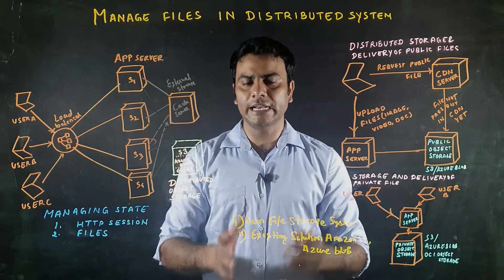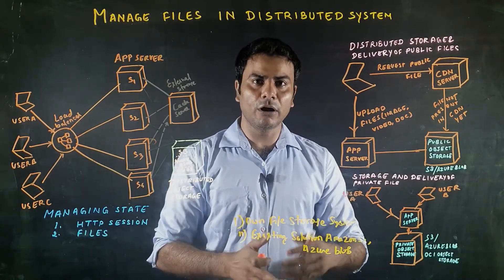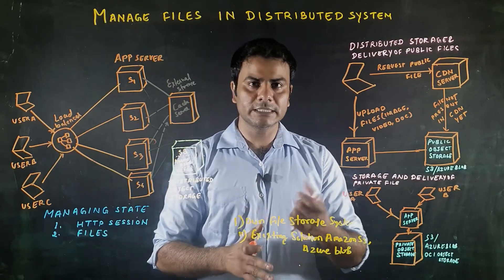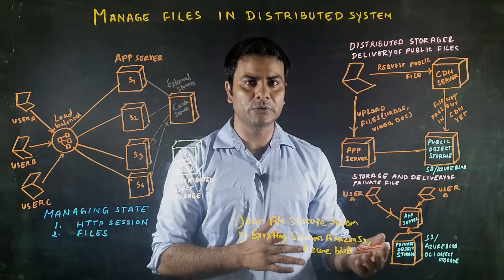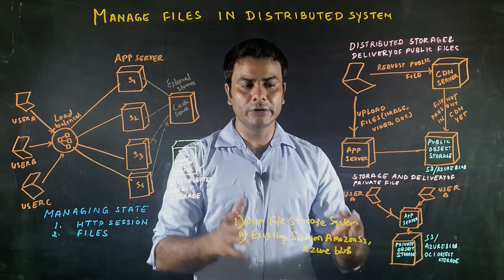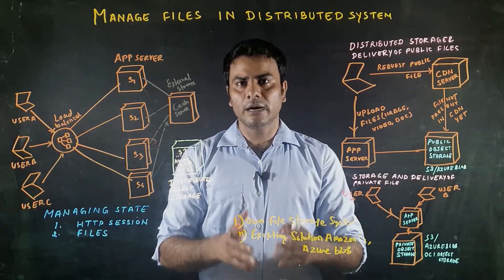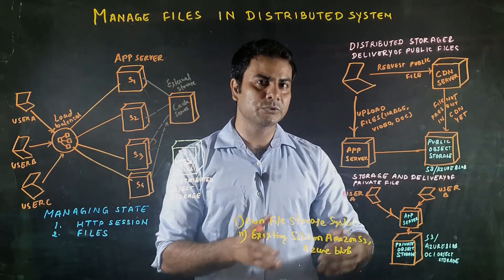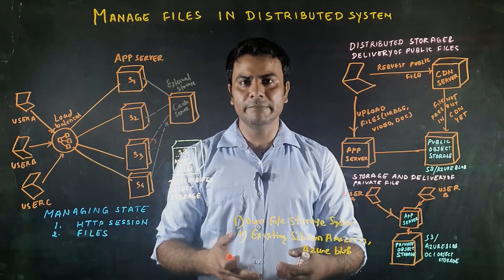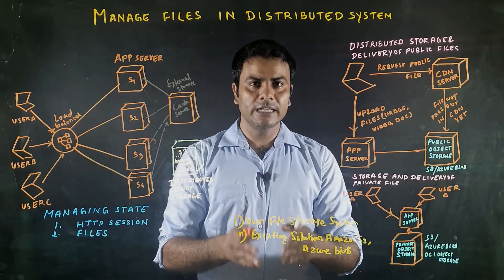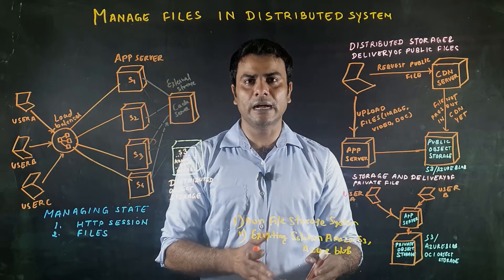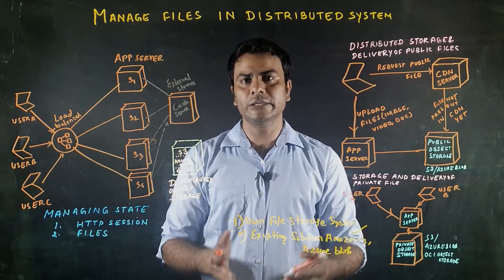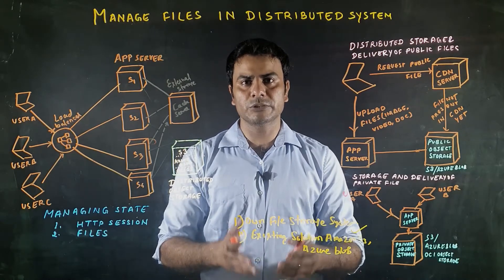Either we can build our own file storage system, or we can use an existing solution like S3, Azure Blob, or OCI object storage. If we want to design our own file storage system, it will take a lot of effort to build — we need it to be scalable, highly available, and secure. The existing solutions like S3, Azure Blob, or OCI object storage are relatively cheaper, scalable, highly available, and more secure.